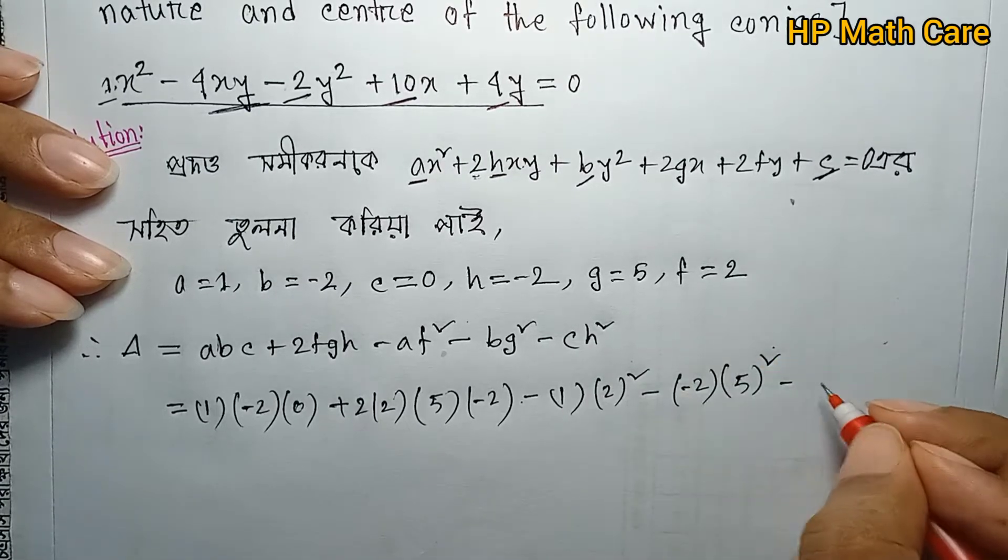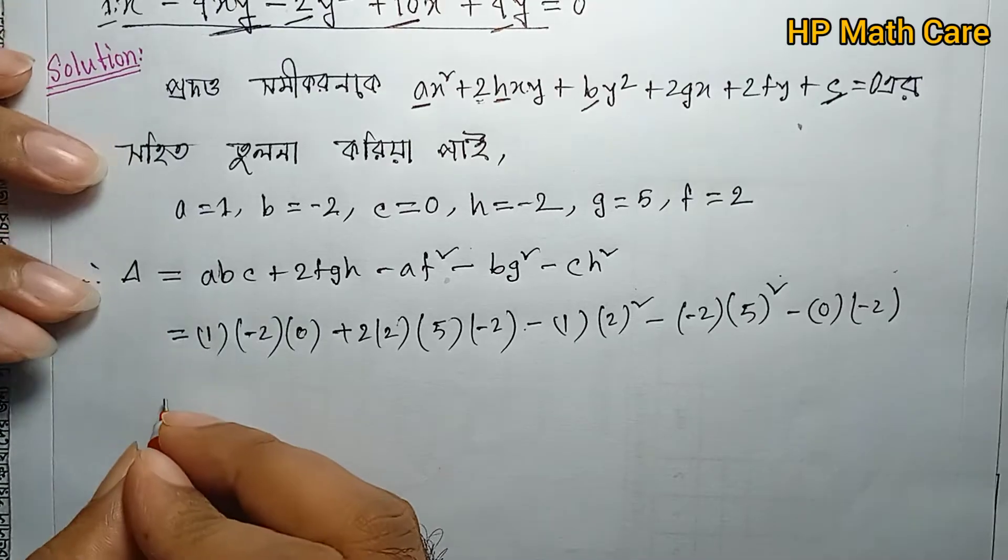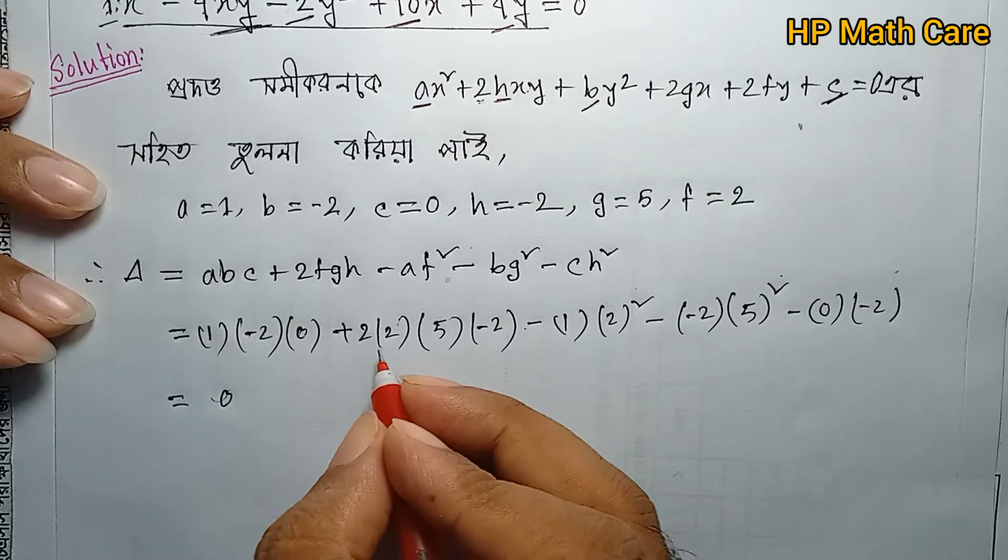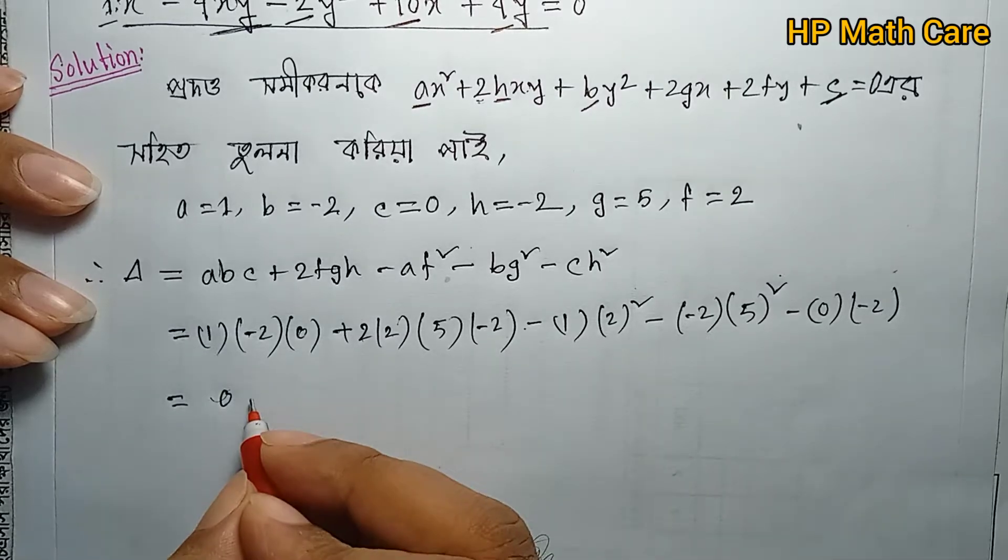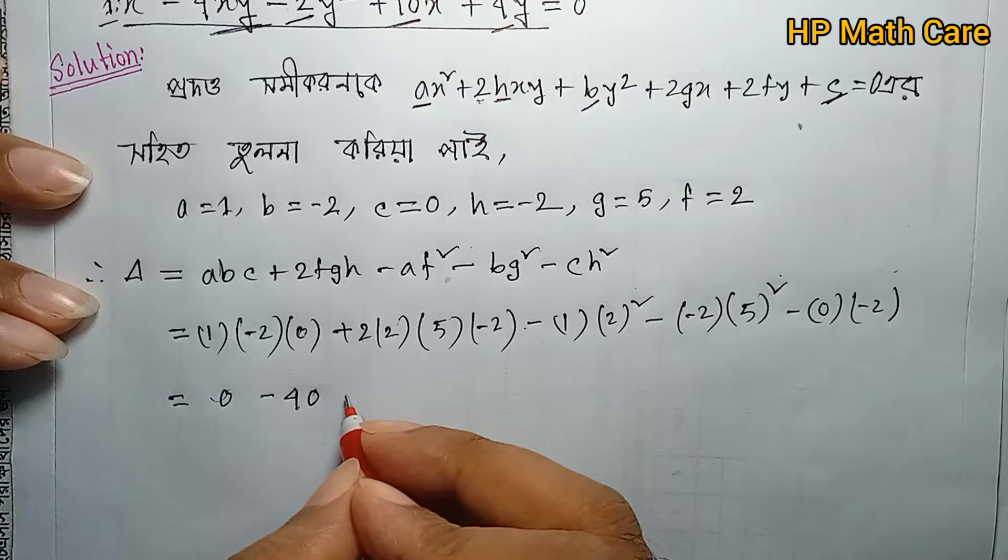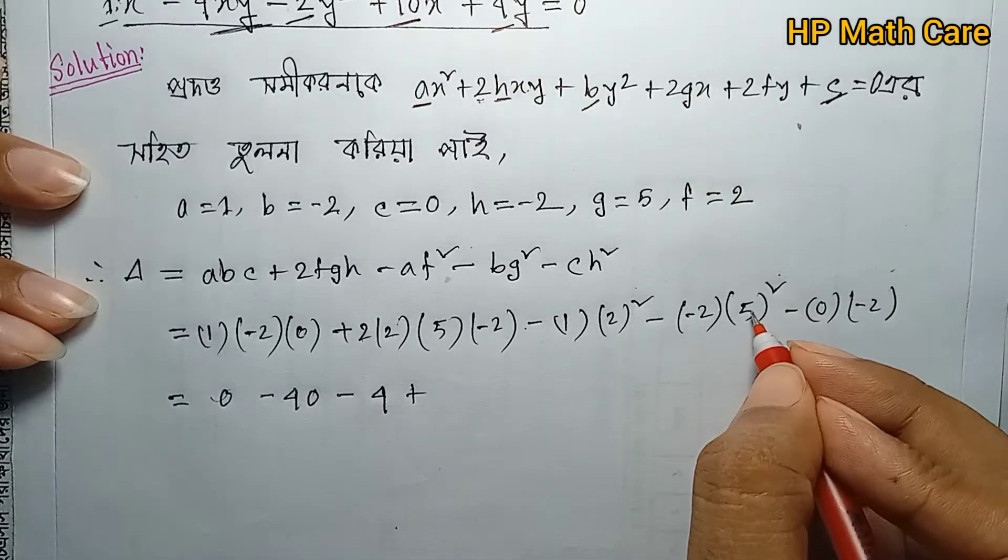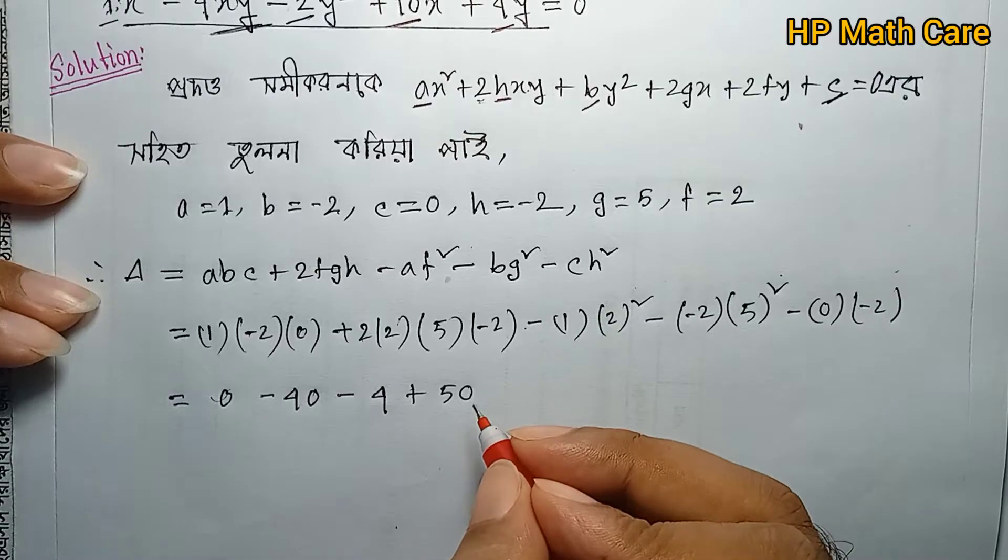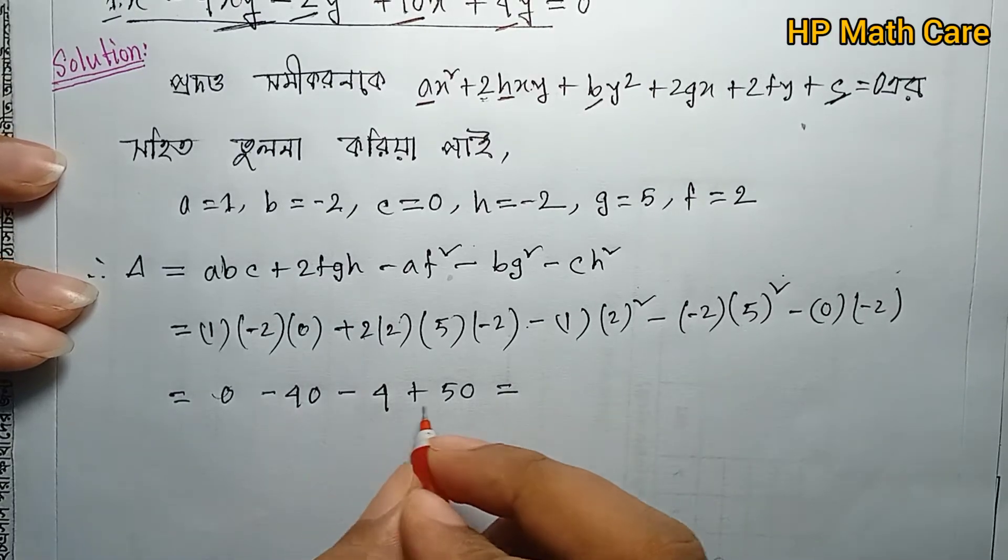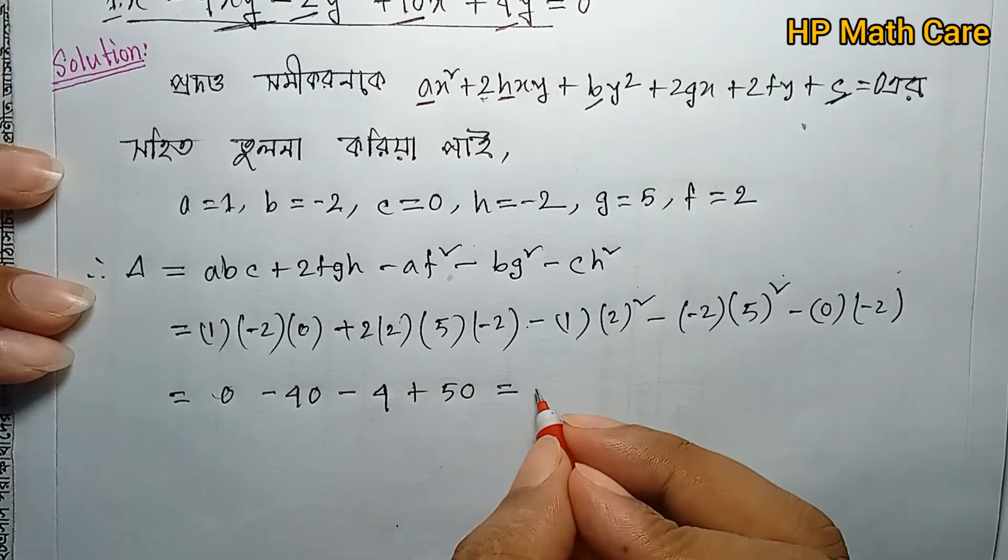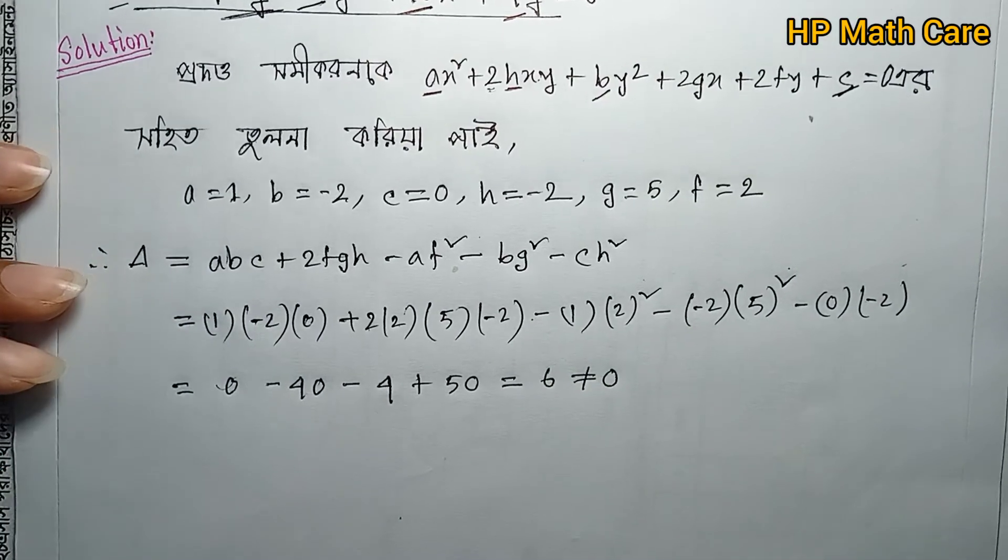So Δ = (1)(-2)(0) + 2(2)(5)(-2) - (1)(2)² - (-2)(5)² - (0)(-2)². This equals 0 - 40 - 4 + 50 = 6 ≠ 0.